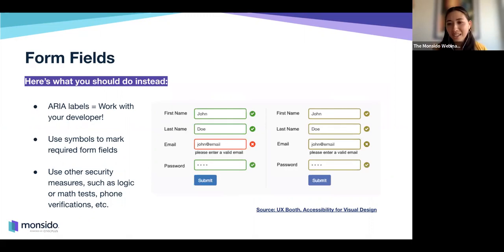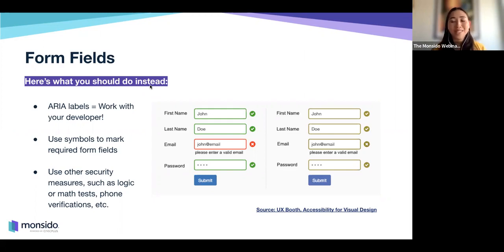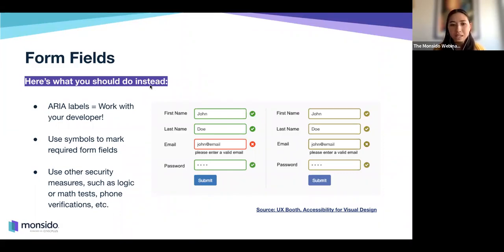What should you do instead? For ARIA labels, this is something you need to work with your developer on and make sure they're also educated on accessibility. Use symbols as well as color to mark form fields — in the updated example, when a person has entered an invalid email, it's not only color depicting the incorrect field, but also an X symbol showing what's wrong, plus text saying 'please enter a valid email.' This just creates a good user experience. For security, use alternatives to CAPTCHA — logic or math tests, phone verification, and other accessibility-friendly security measures available if you Google them.